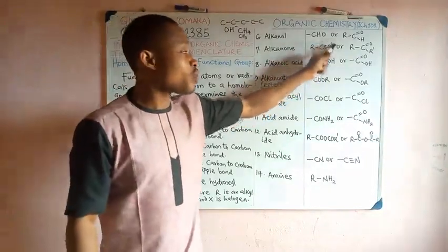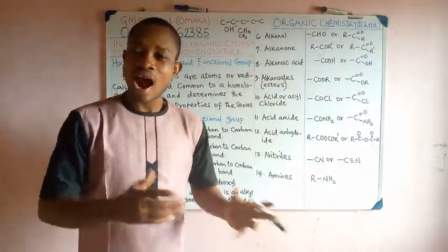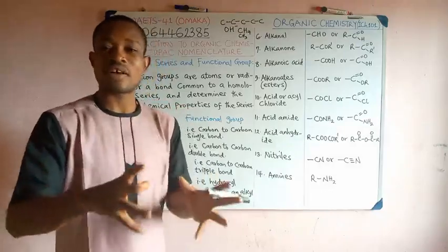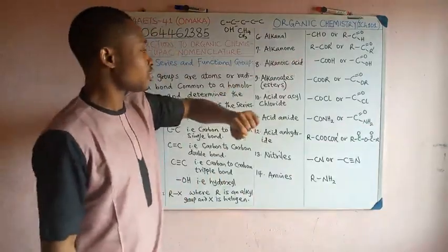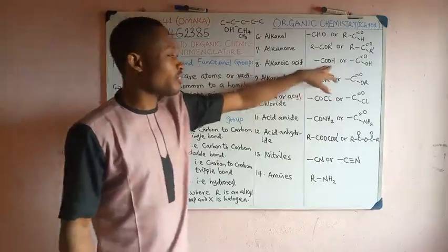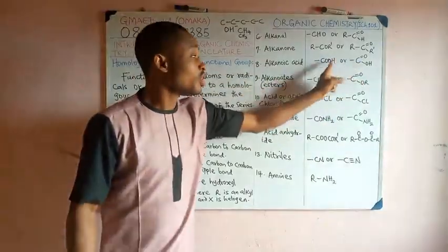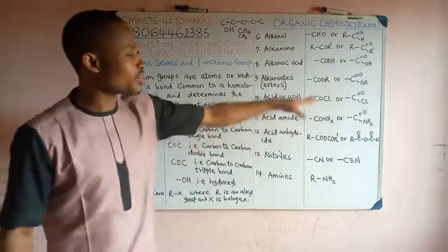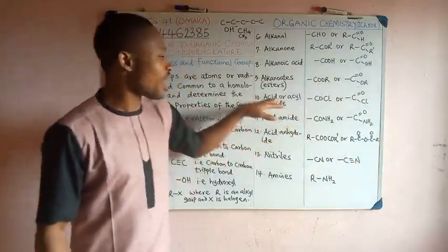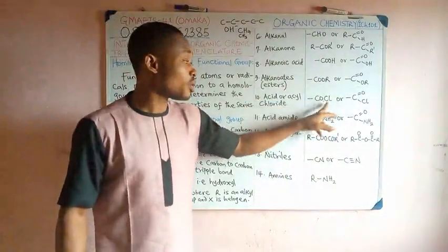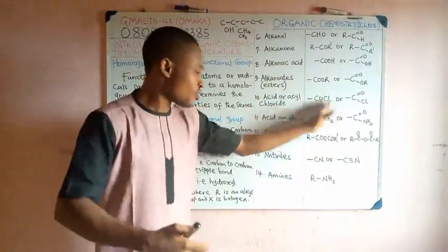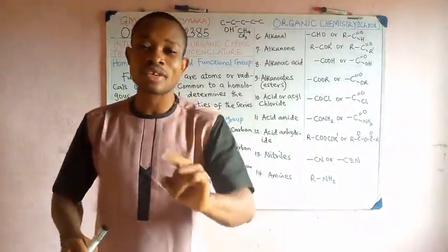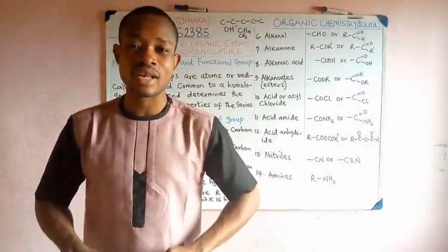This R and R prime are alkyls. R may be the same as R prime or it may be different. We will move into each of the homologues. In discussing them, we will understand this fact. Now, alkanoic acid's functional group is COOH. This is the expansion. The first oxygen is doubly bonded to the carbon, and then we have OH. We have alkanoids with their functional group. We have the acid chloride, you can see the functional group COCl, and then the rest of them. We are going to take these homologues one after the other, starting with alkanes in our next class.